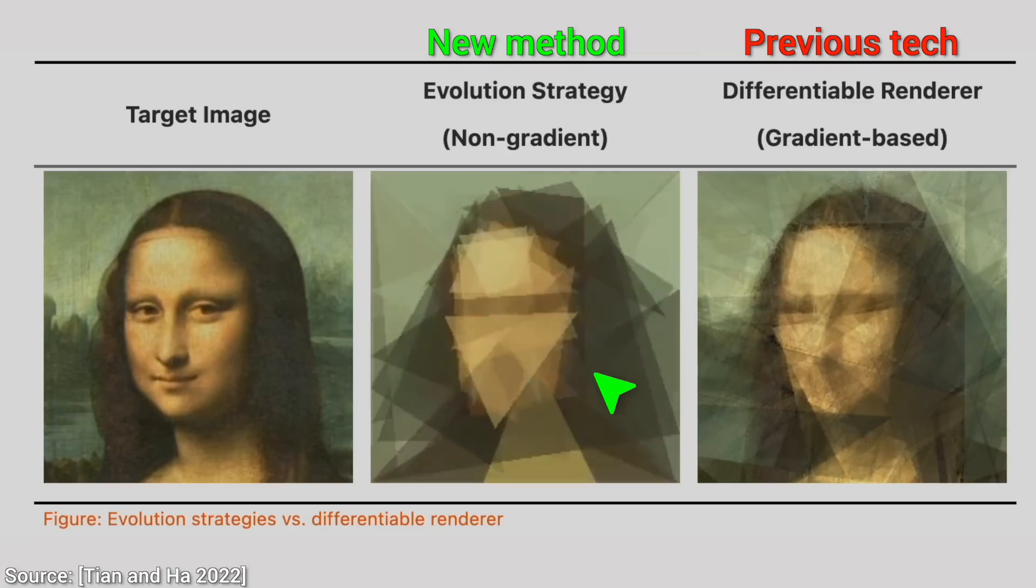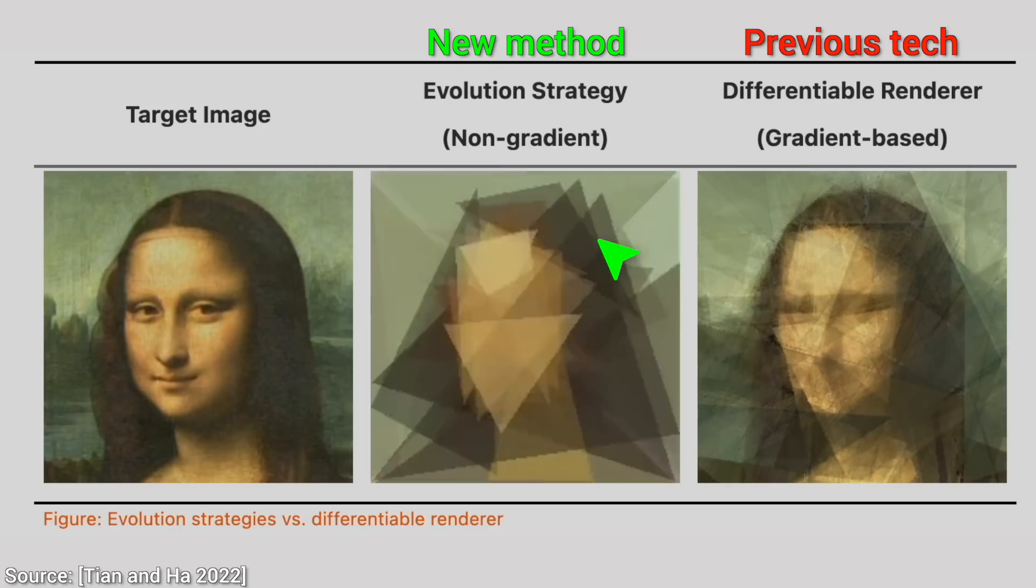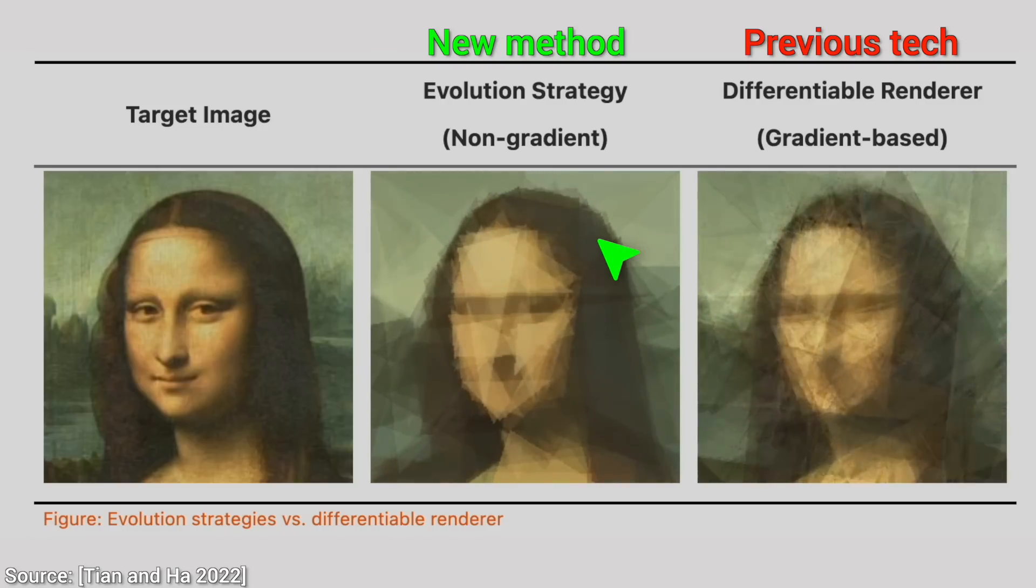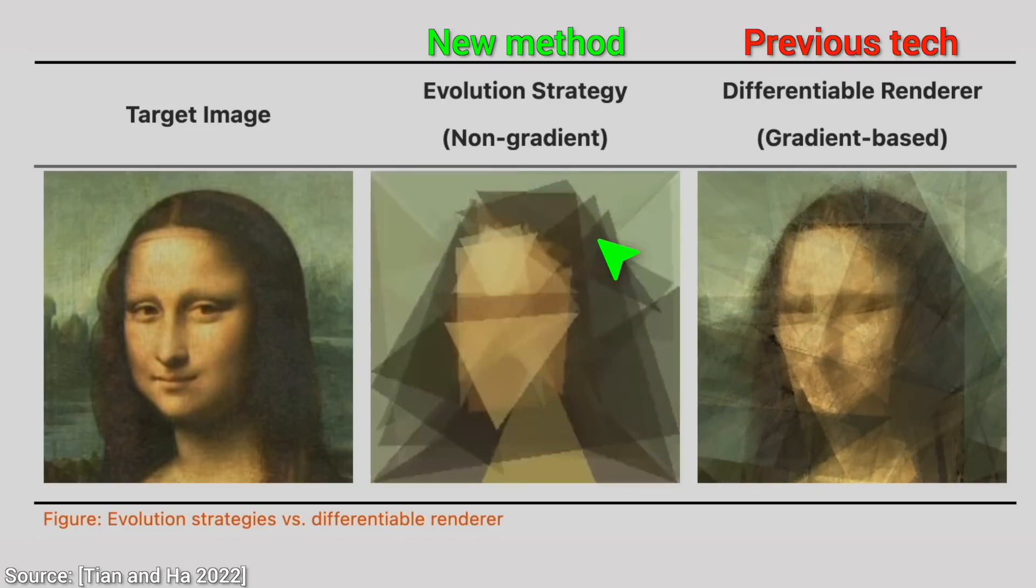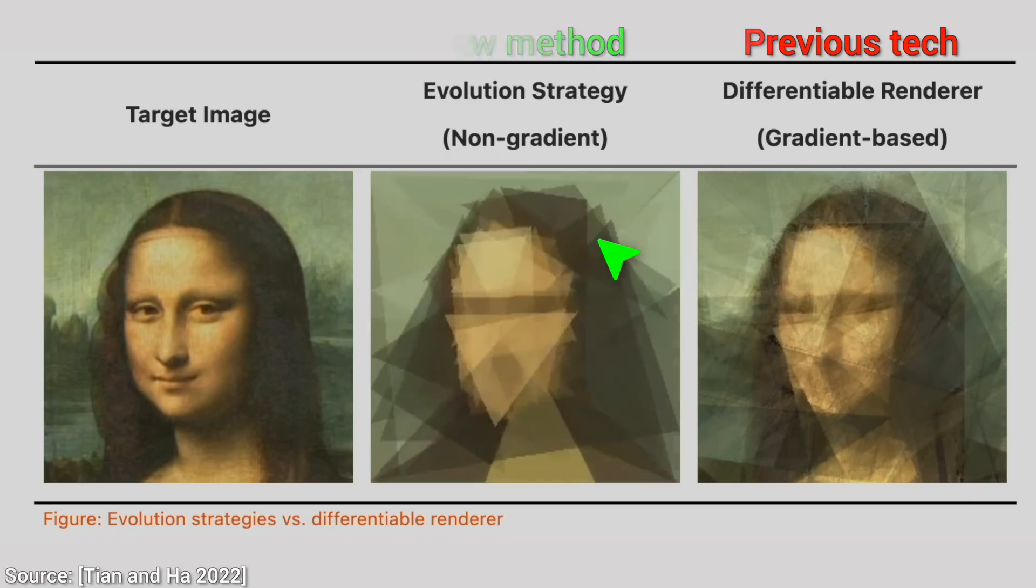Interestingly, they also have different styles. The differentiable renderer introduces textures that are not present in the original image, while the new technique uses large triangles to create a smooth approximation of the background and the hair, and uses the smaller ones to get a better approximation of the intricate details of the face. Loving it.